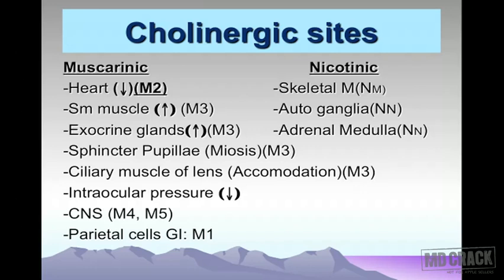The heart contains M2 receptors. The central nervous system contains M4 and M5 receptors. The M1 receptor is present in the parietal cells of the gastric mucosa, responsible for secretion of gastric hydrochloric acid. That's the summary of the muscarinic receptor sites.